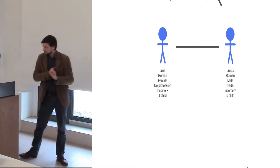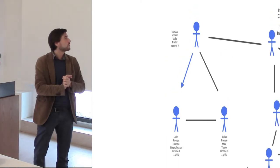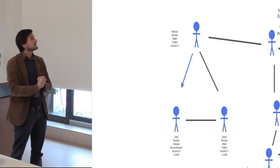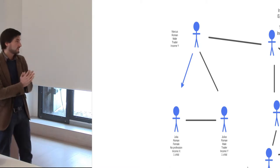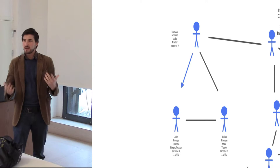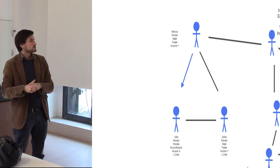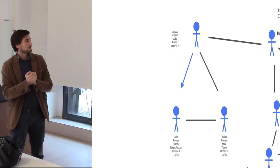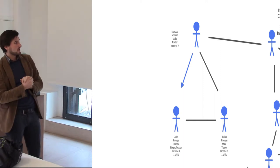Now the third one. Let's introduce the third Roman called Marcus. He's male, he's also a trader and has a certain income. Now there's a lot of lines drawn here. Those relationships, let's just assume now they are friendship relationships or commercial contacts. These people know each other if there's a line between them.